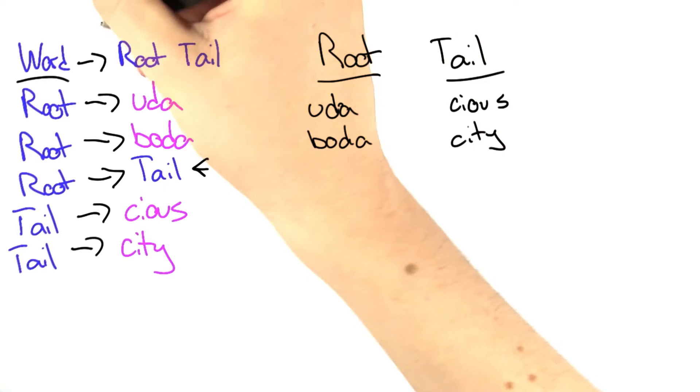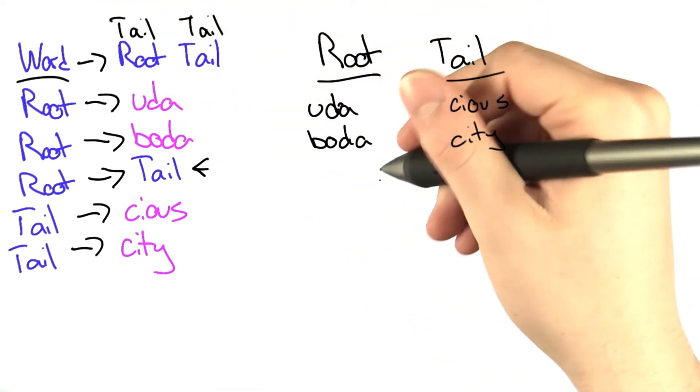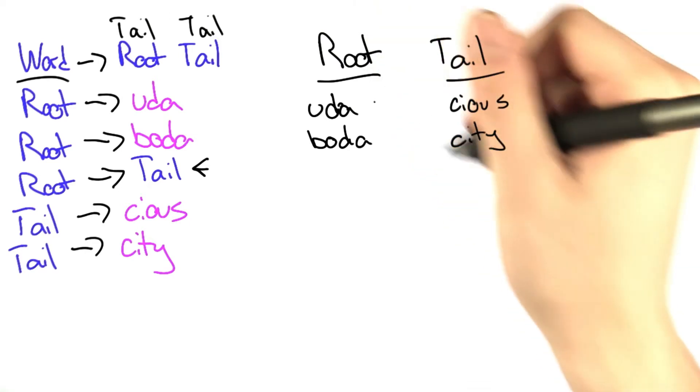So you could have a word that's really the same as tail, tail, which adds two more possible combinations to what root can be.